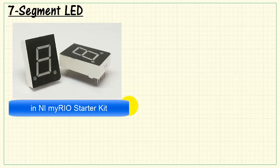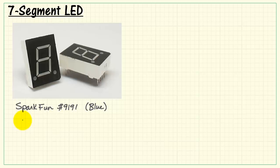Here's the 7-segment LED that is included in the NI MyRio Starter Kit. It's also available from SparkFun. This is a common anode device.